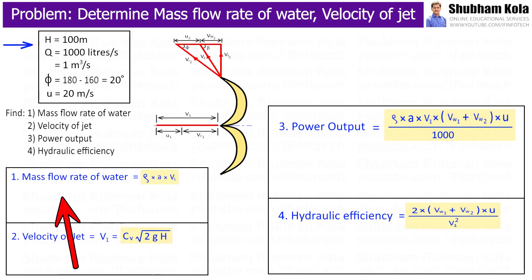First of all, we want to determine mass flow rate of water. So the formula is rho A V1, where we know density of water, rho, is 1000 kg per meter cube, and area A multiply by velocity of jet V1 equal to discharge Q. Therefore, by calculating this, we will get mass flow rate of water equal to 1000 kg per second.